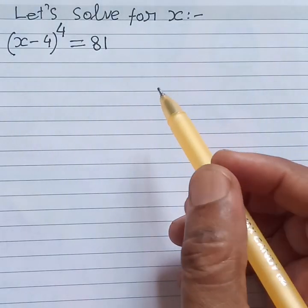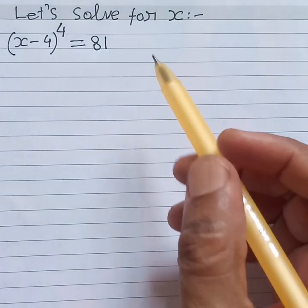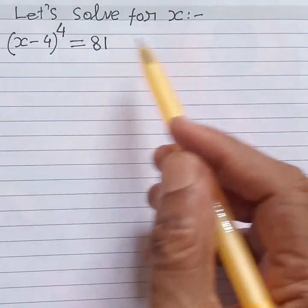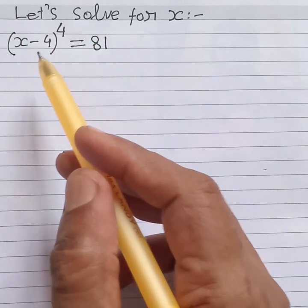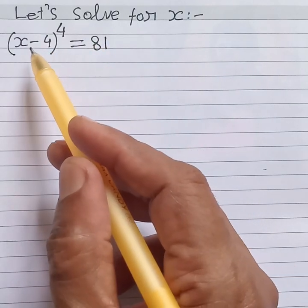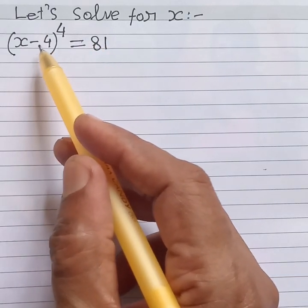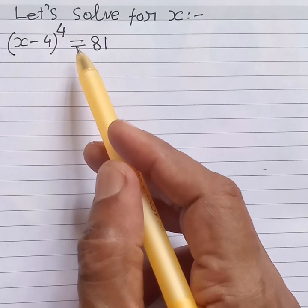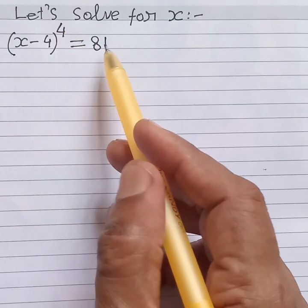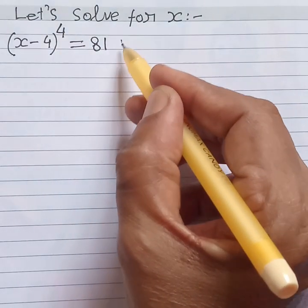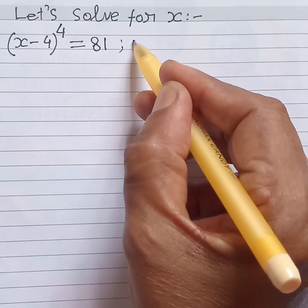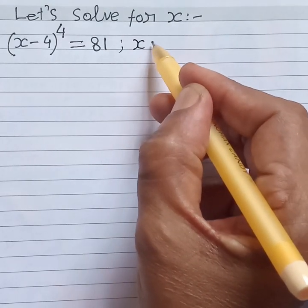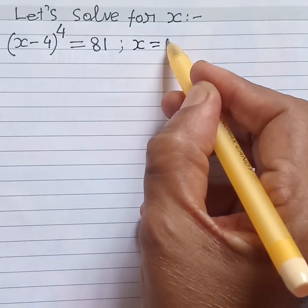Hello, welcome back. We need to solve for x from the given equation: (x minus 4) to the power 4 is equal to 81. What are the values of x?